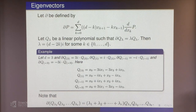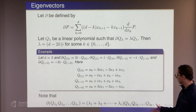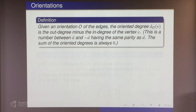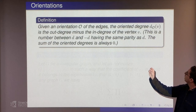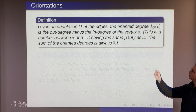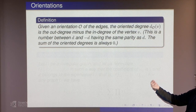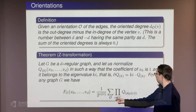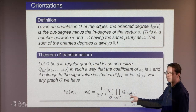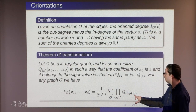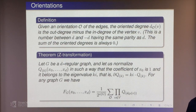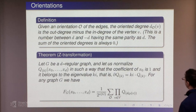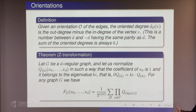We can ask what happens when we write up the subgraph counting polynomial in this basis. It turns out we need orientations. Given an orientation, the oriented degree is the out-degree minus the in-degree — a number between −d and d with the same parity as d. The theorem is simply that to write out F_G, you sum over all orientations the product of eigenpolynomials at the oriented degree, divided by 2 to the number of edges. This gives a connection between subgraph counting and orientation counting.